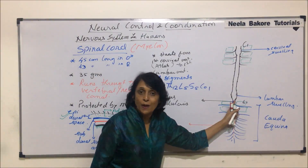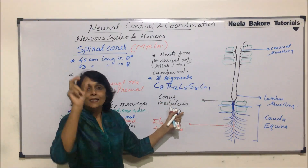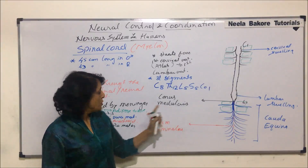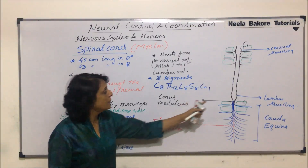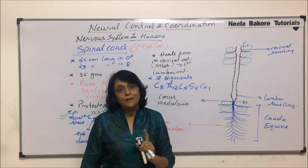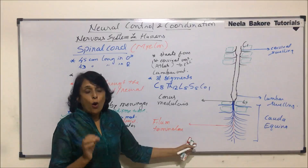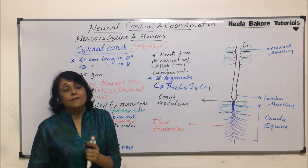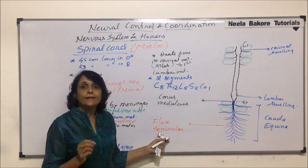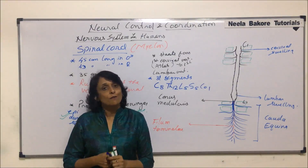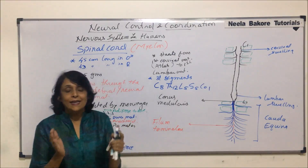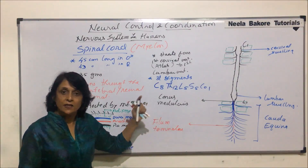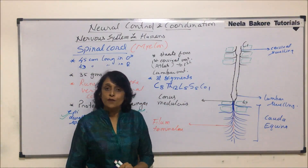Structurally, the spinal cord is a long tube or structure which runs through the vertebral column, protected by meninges as well as the vertebral column. There are two swellings — one in the cervical and one in the lumbar region — and all nerves arise from the nervous part of the spinal cord. When we see the cross-section, we find two depressions, one on the dorsal side and one on the ventral side, and in the spinal cord the gray matter is inner and white matter is outside. Let us now draw the transverse section of a spinal cord.